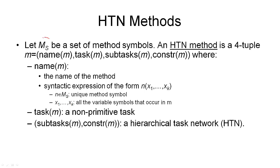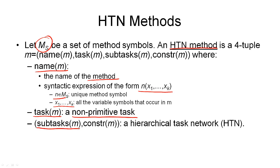We start off with a set of method symbols that we use to uniquely name our methods, just as for STN planning. Then we say an HTN method is a four-tuple consisting of four things. Firstly, there's the name of the method, and that name is, just like for an STN method, consisting of a method symbol and then has a syntactic expression of the form n of x1 through xk, where n is a method symbol and x1 through xk are the variables representing the objects that are manipulated by this method. Also like for STN methods, the task of the method is the second component. This must be a non-primitive task that is accomplished by this method. And then, again as for STN methods, we have a set of subtasks — these are the tasks into which the method breaks down. So far, there's nothing new.